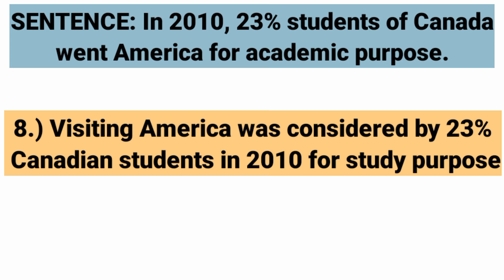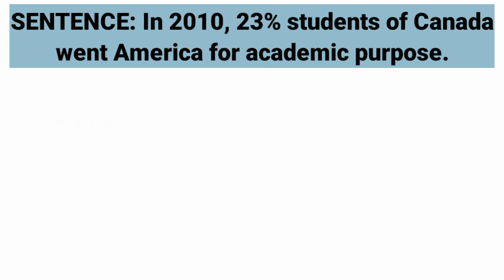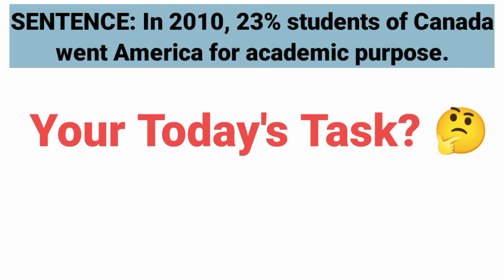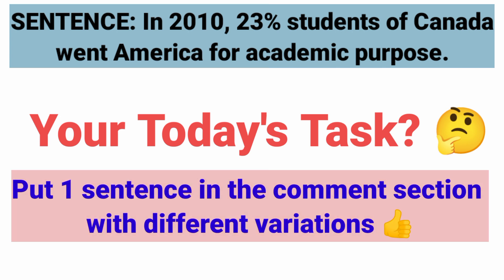So guys, this is all about today's video — all about the variations that you can add in your Task 1 with any type of data. Your today's task is: similar to what we discussed, create one sentence of your own with a variation and put it in the comment section. I will check it. Try to write one sentence yourself and share it with others in the comments. Thanks for watching. If you have any query or doubt about any type of variation, you can ask me in the comment section.